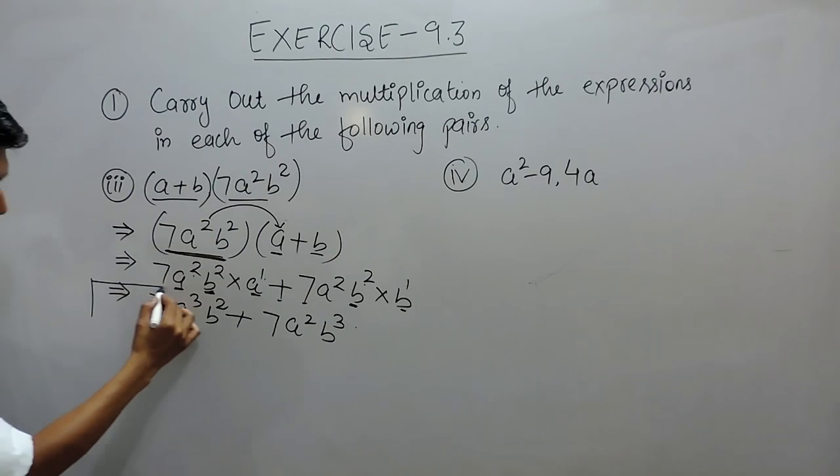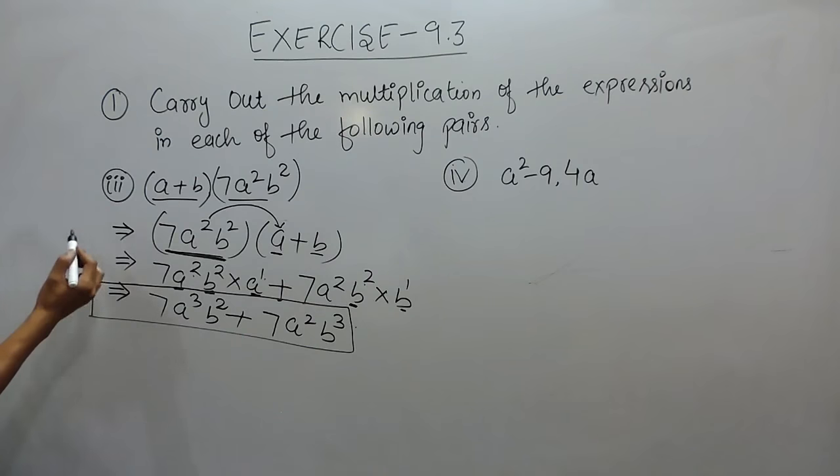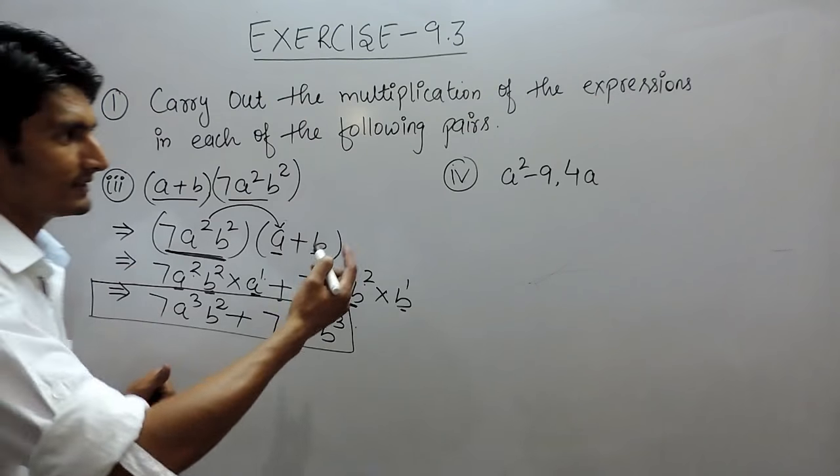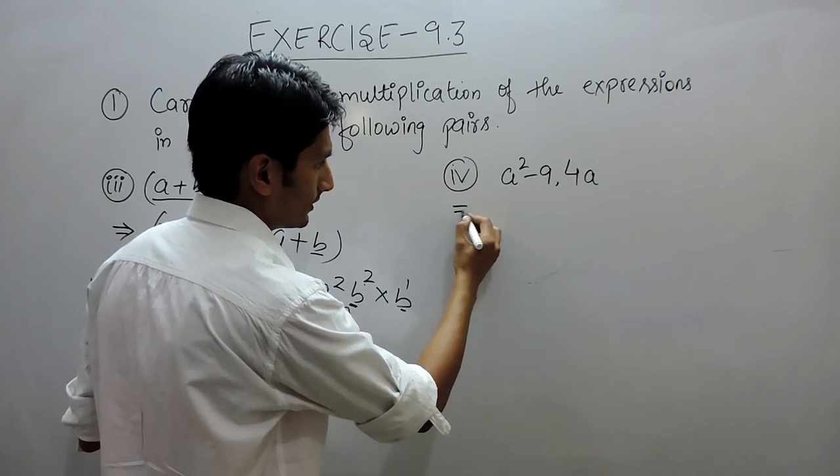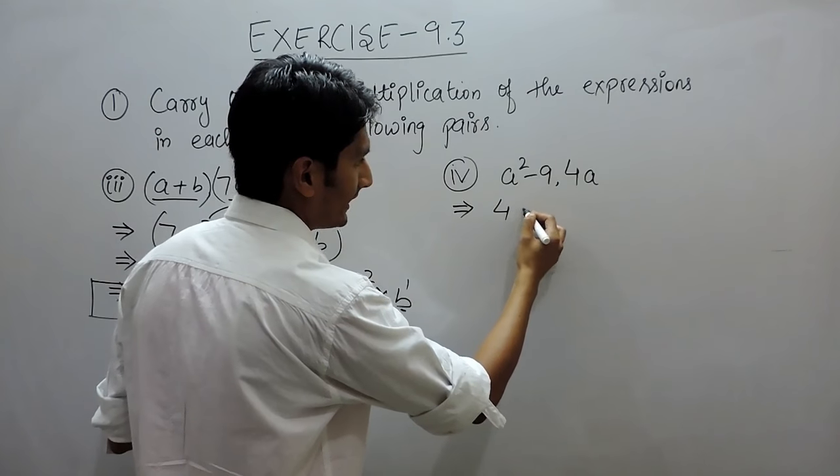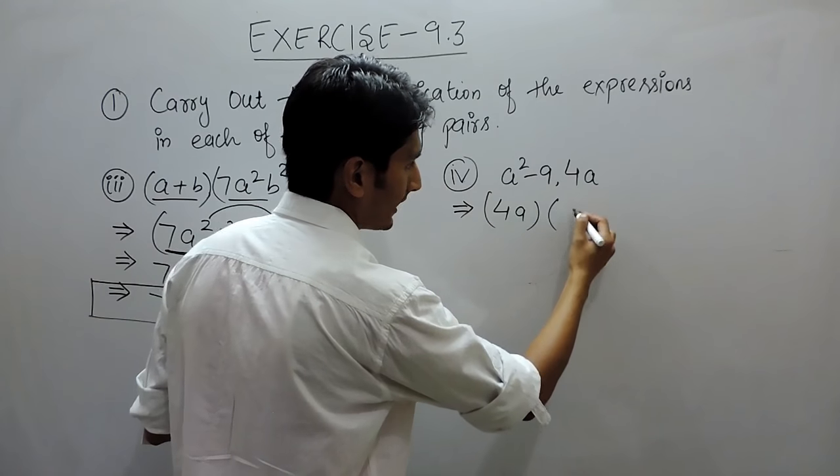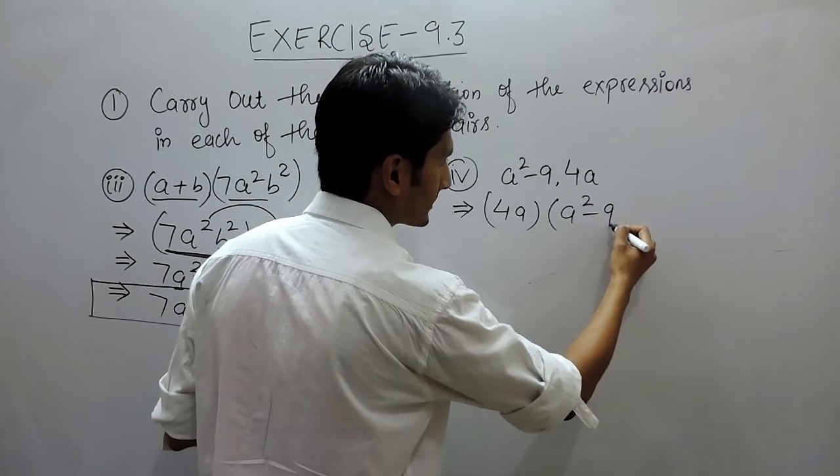So this will be the answer for this first question. Same case with this—write a² first, sorry, 4a first, and after that a² minus 9.